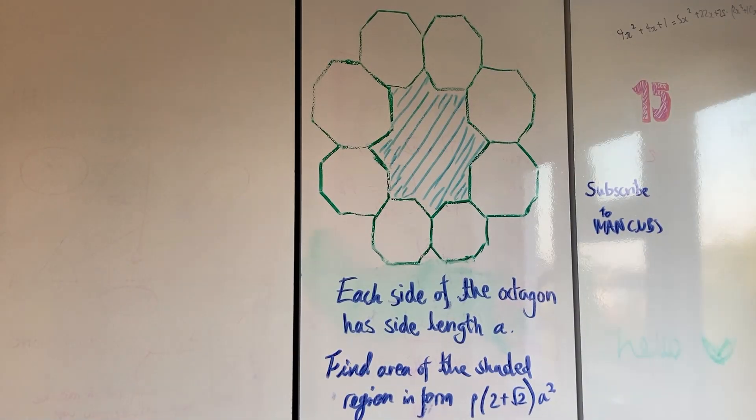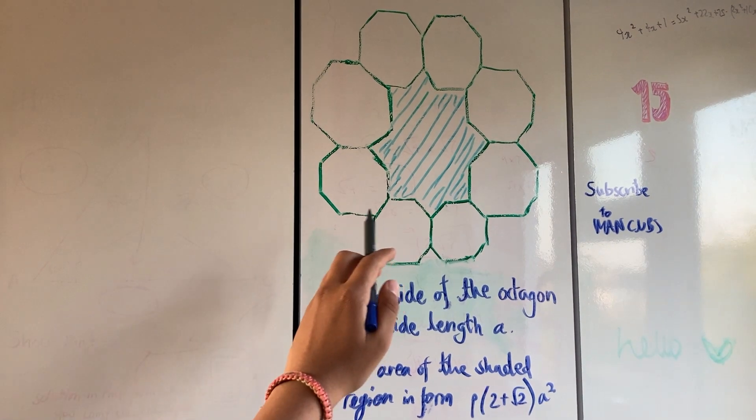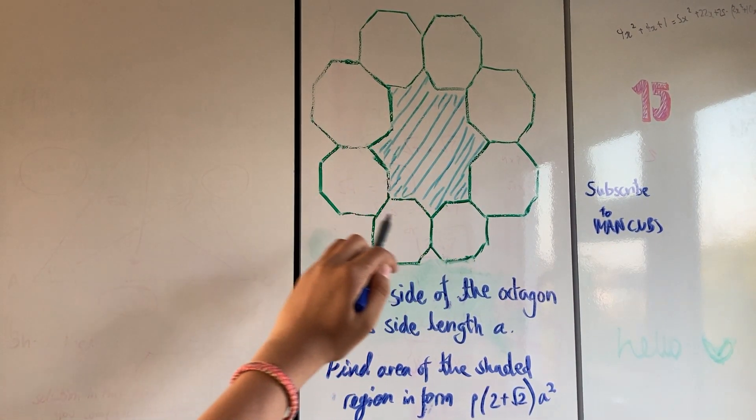Here we have a question with eight different octagons and a star in the middle. This is one of the questions from today's GCSE Maths paper and I'm going to show you how to go through it step by step and find the answer.